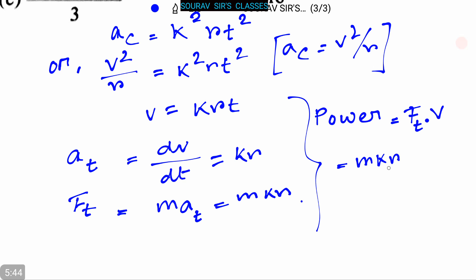So it is mkr into kr into krt. Or we can say that the power is equal to m k square r square t.